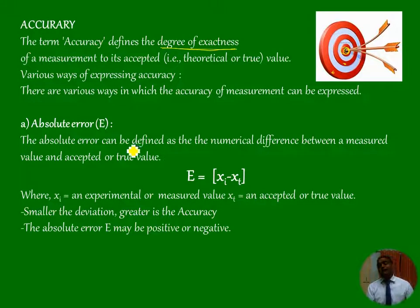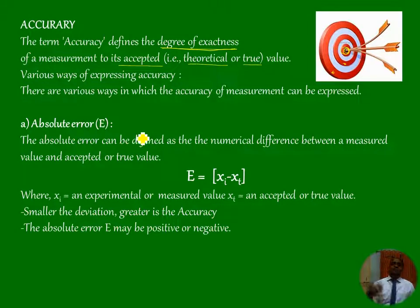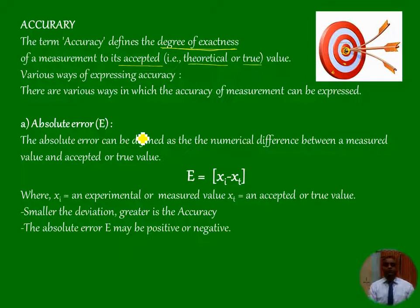How exactly you are getting particular results — that means the measurement should be near to its accepted value, or its theoretical or true value. That means you should be near to the exactness, near to the accepted value, near to the theoretical value, which is called accuracy.